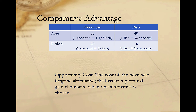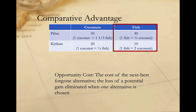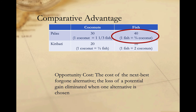Now if we compare each country's opportunity cost for fish and coconuts, a slightly different picture emerges. Palau has absolute advantage in the production of both fish and coconuts, but Kiribati has comparative advantage in the production of coconuts — its opportunity cost for producing coconuts is only half a fish, lower than Palau's cost of one and one-third fish per coconut. Conversely, Palau has comparative advantage in producing fish, giving up fewer coconuts per fish than Kiribati would. So Palau should specialize in fish production, and Kiribati should focus on coconuts.